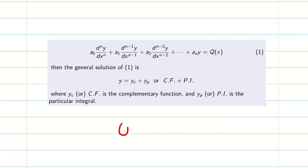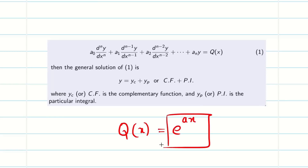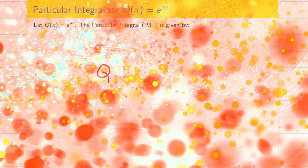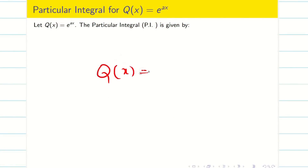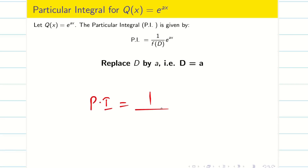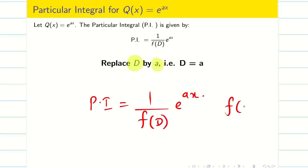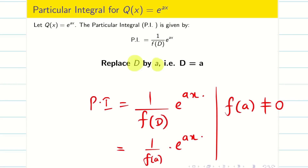In this session our concern is: if q(x) equals e^(ax), how do we find PI? Consider q(x) = e^(ax). We can write PI as 1/f(D) · e^(ax). The rule is to replace D by a — that is, substitute D = a — and we get f(a). If f(a) is not equal to zero, then the solution is 1/f(a) · e^(ax).